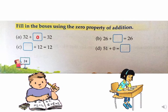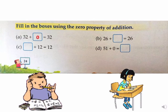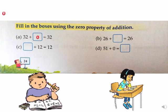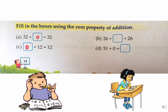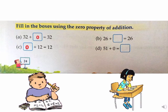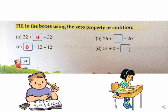See part B. Blank plus 12 is equal to 12. What should be added to 12 so that the sum remains 12 itself? Yes, according to the zero property of addition, 0 should be added to 12 so that the sum remains 12 itself. So, you will write 0 in the given box. Now, you will do the next two parts and check your answer from the given picture.